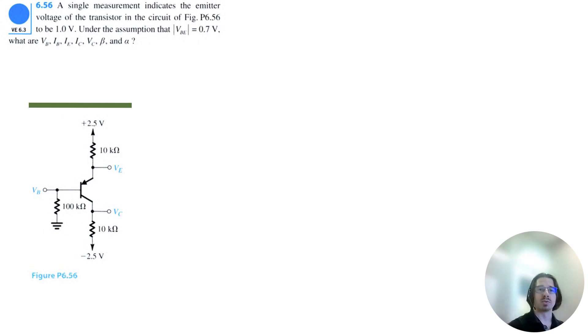Let's solve problem 6.56 for Microelectronics Circuits 8th Edition by Sedra and Smith. A single measurement indicates the emitter voltage of the transistor in the circuit to be 1 volt.